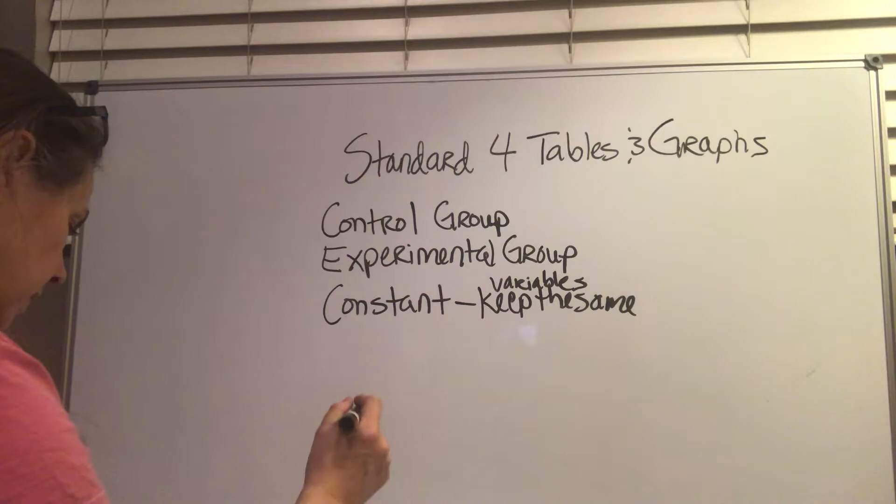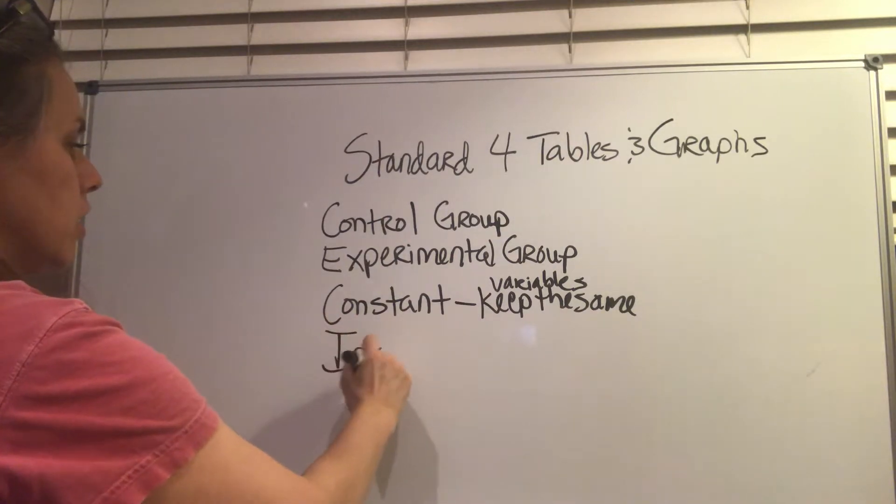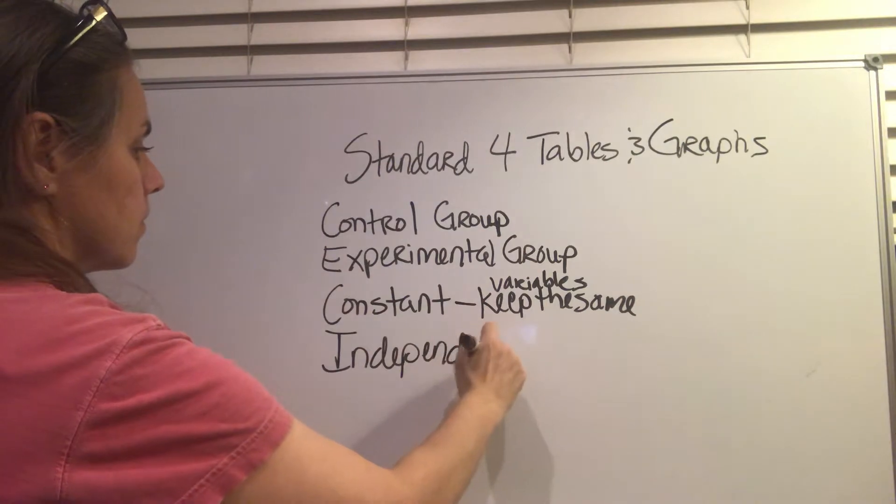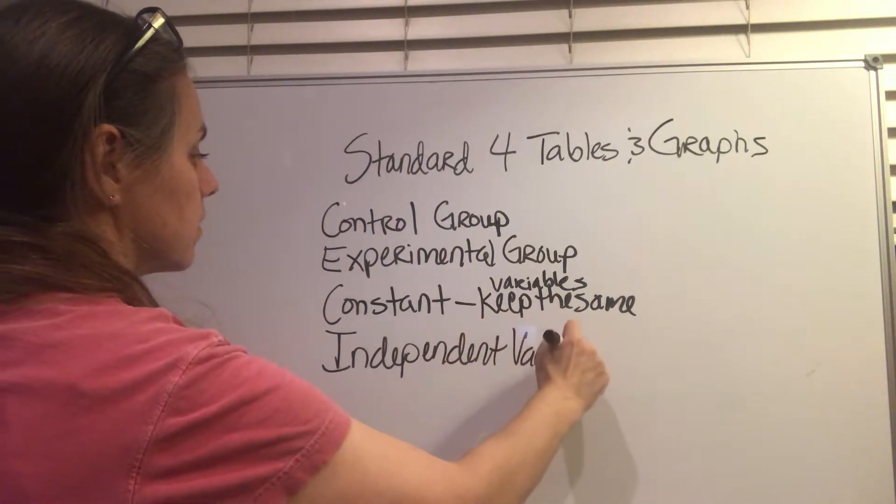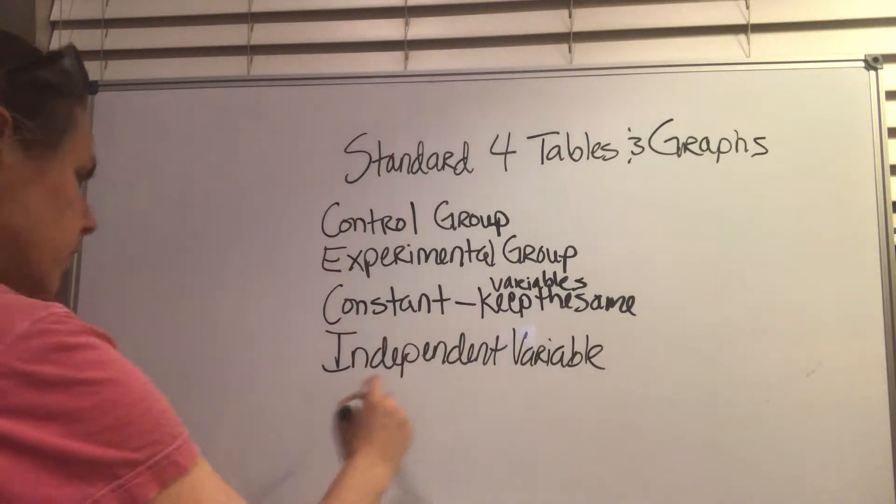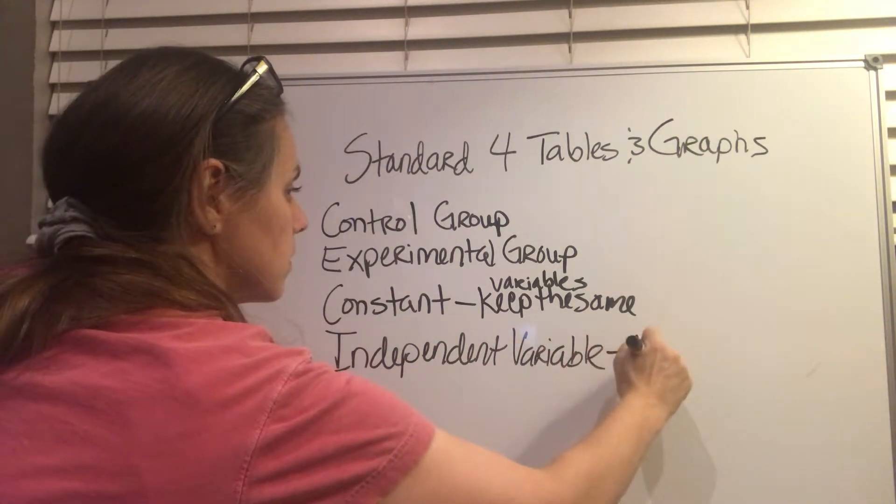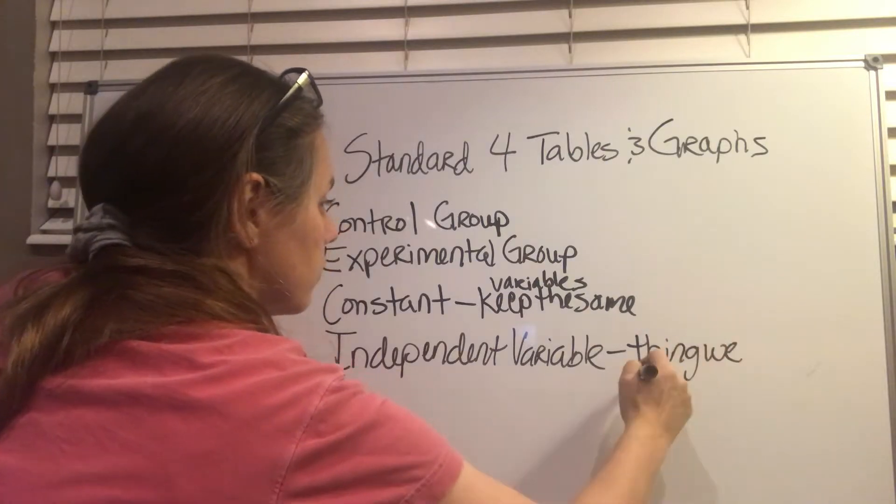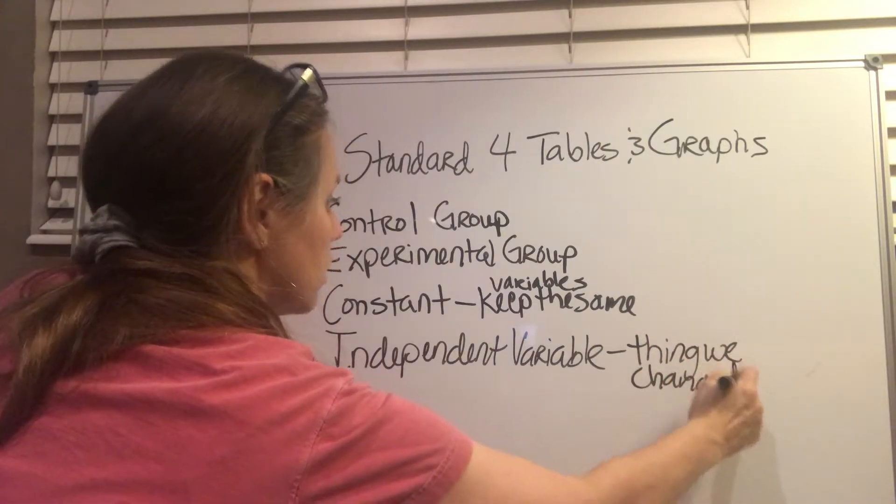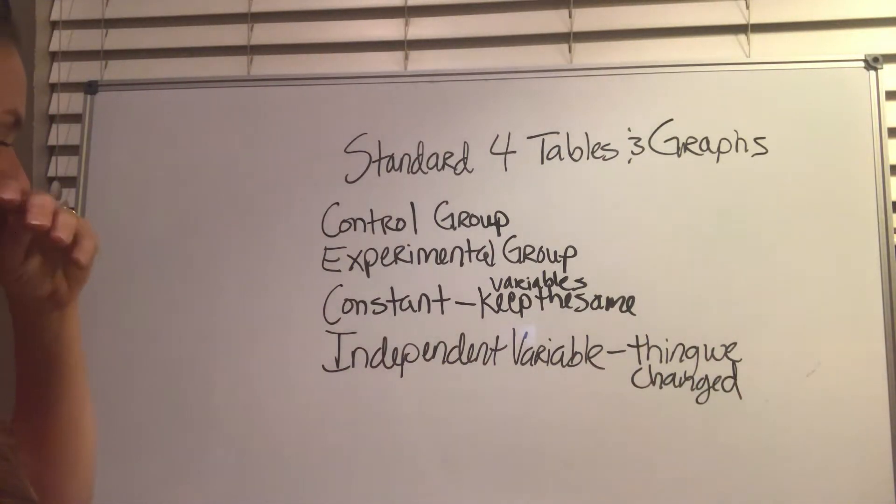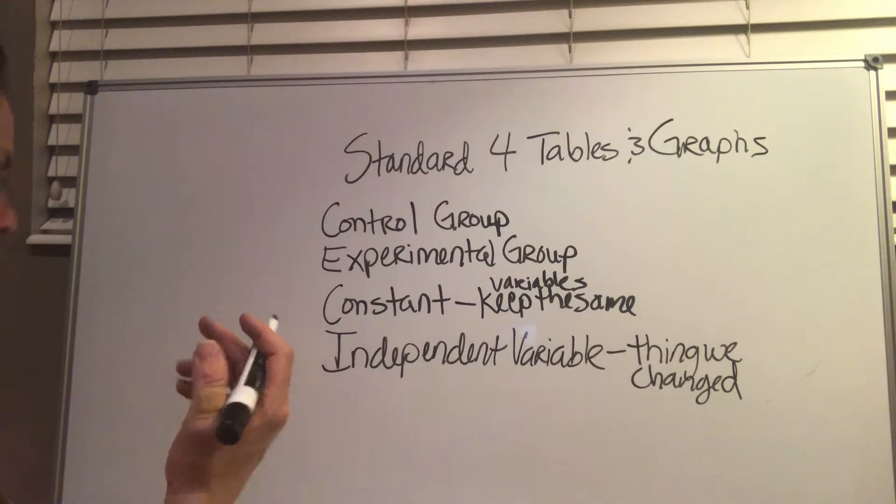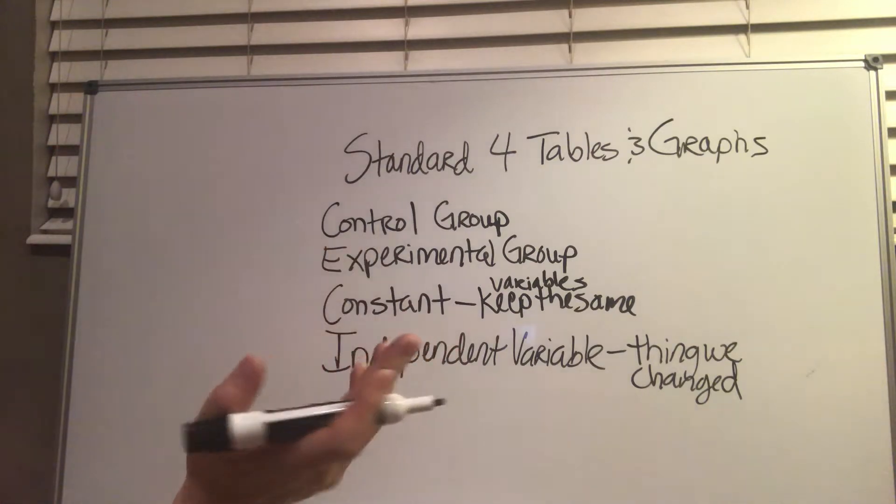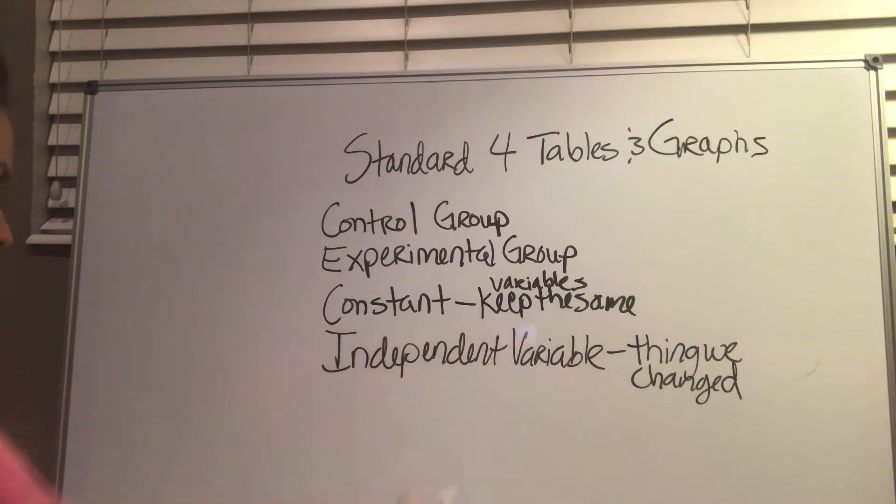And then the independent variable was the thing that we changed. For example, the thing that we changed in the experiment I just spoke of was the water. So we'd have one that we'd give water to and the other one we wouldn't give water to. Or we could have various plants and give some water, just a little bit of water, and some more, and we'd measure that amount. And that would be our independent variable.